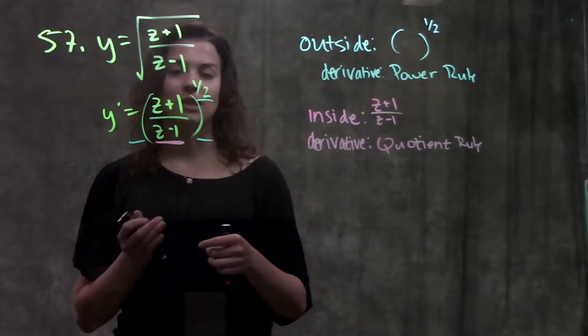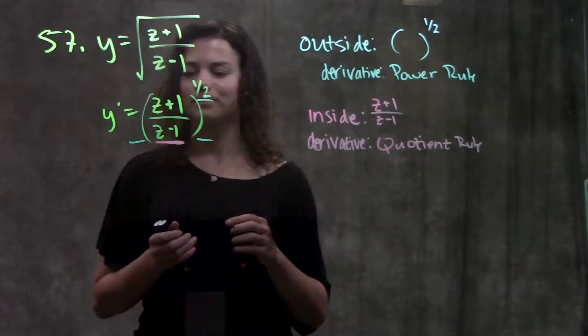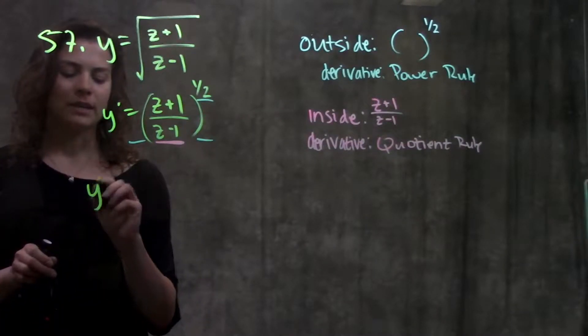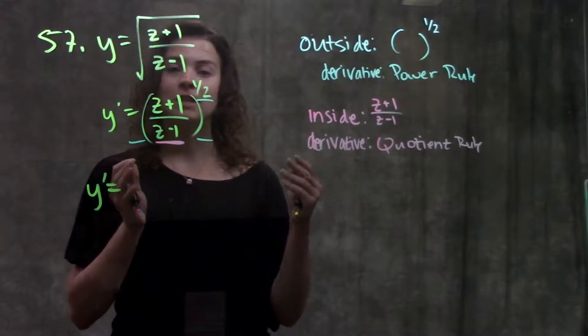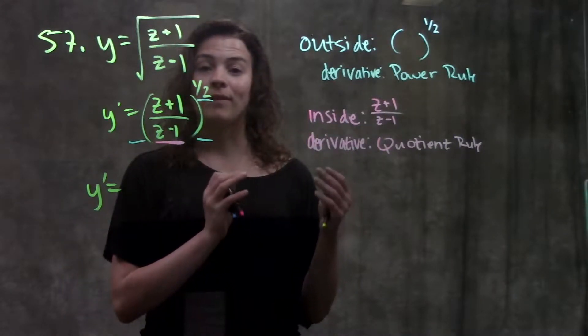From there, it's just using chain rule and multiplying them together. So if you remember, chain rule tells us to take the derivative of the outermost function, then multiply it by the derivative of the inside function.